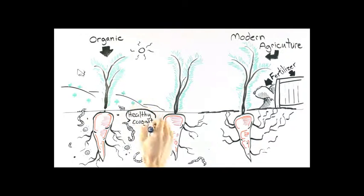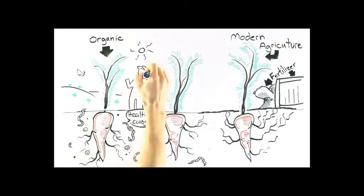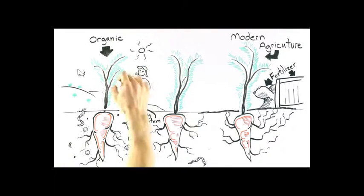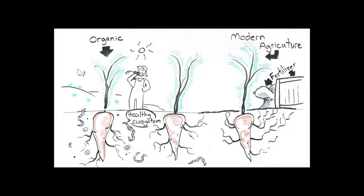So what organic farming is, is going back to that healthy soil, sound ecosystem, out of which grows a healthy plant. When you eat that plant, you capture the health of that entire ecosystem.